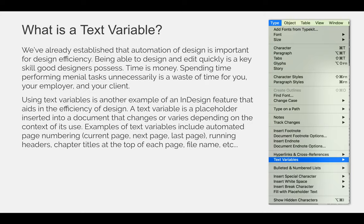We're going to talk about text variables and inserting special characters in this lecture. We've already established that the automation of design is important for efficiency. Being able to design and edit quickly is a key skill good designers possess. Time is money — spending time performing menial tasks unnecessarily is a waste of time for you, your employer, and your client. Using text variables is another example of an InDesign feature that aids in the efficiency of design. A text variable is a placeholder inserted into a document that changes or varies depending on the content or context of its use.